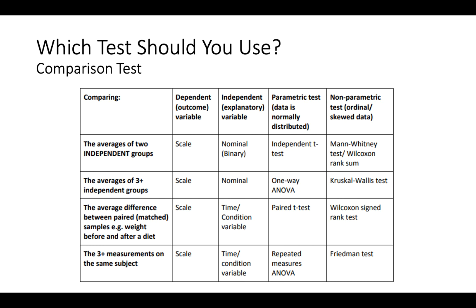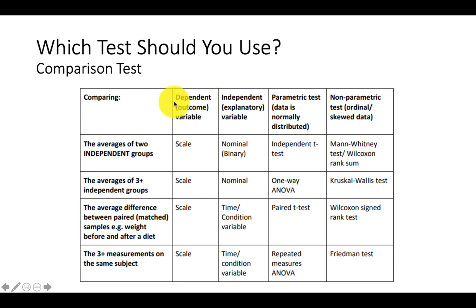So which test should you use? We have a table here. If you want to do a comparison test — checking for significant mean differences between groups — a lot of experimental designs use these. Let's take a look at your outcome variable, the dependent variable. If it's measured on a scale, you can do all these parametric tests.